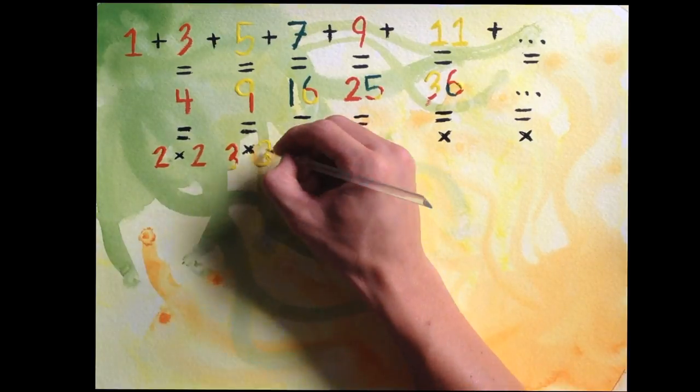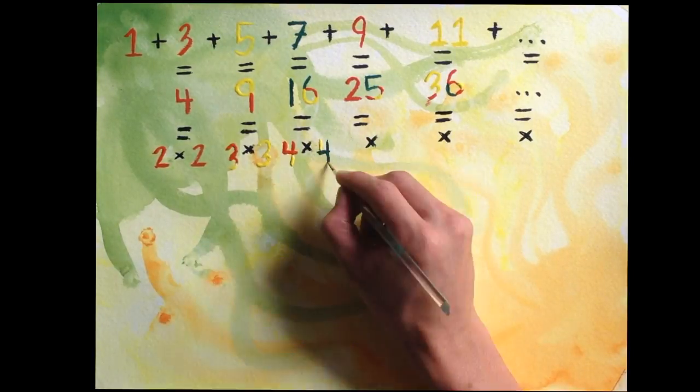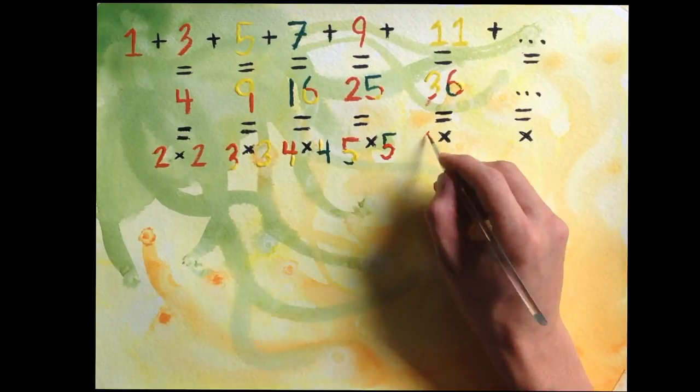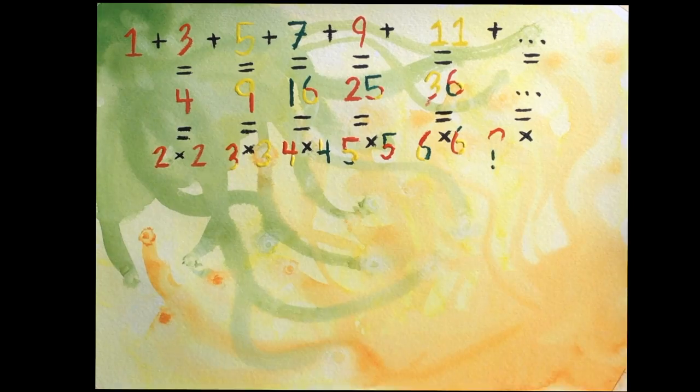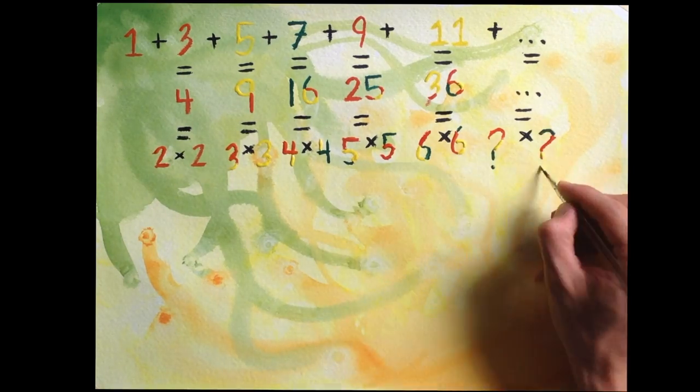So let's do some math. Do you notice anything odd about this pattern? 1 plus 3 equals 4, and so does 2 times 2. 1 plus 3 plus 5 equals 9, and so does 3 times 3. The pattern seems to continue.